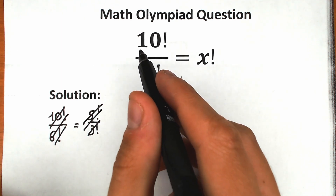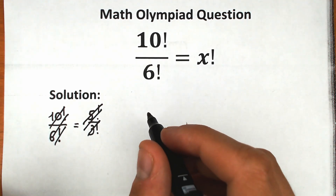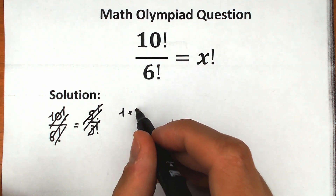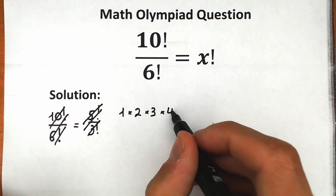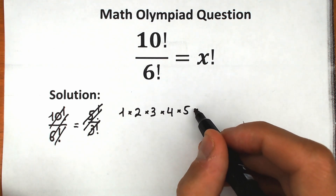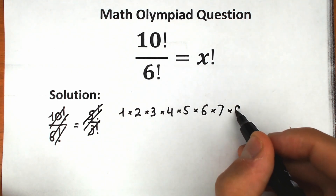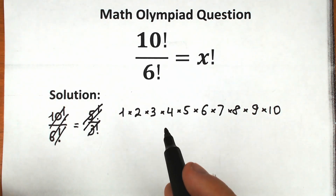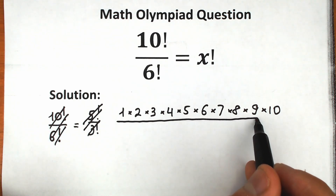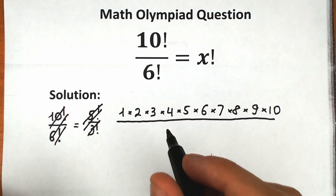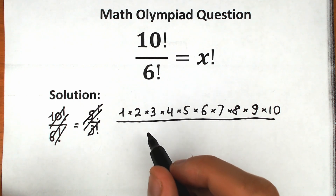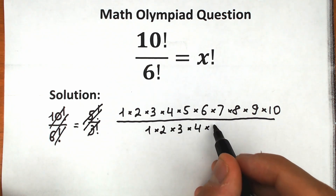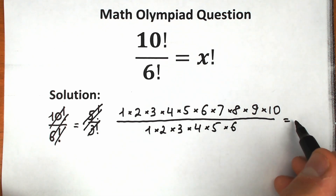What is the correct solution? Let's write 10 factorial as a product — it's a product from 1 to 10: 1 × 2 × 3 × 4 × 5 × 6 × 7 × 8 × 9 × 10. And we divide this by 6 factorial, which is a product from 1 to 6: 1 × 2 × 3 × 4 × 5 × 6. This equals x factorial.